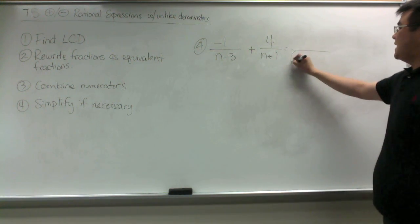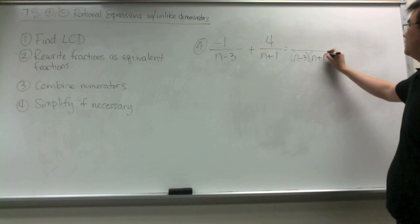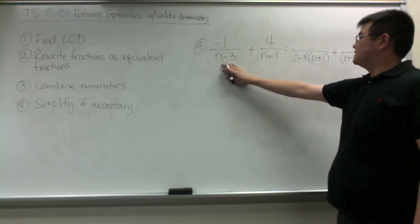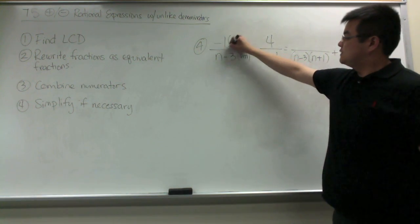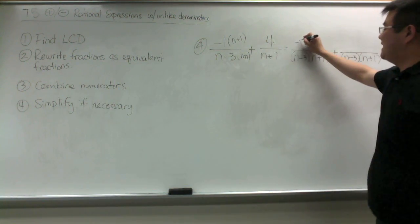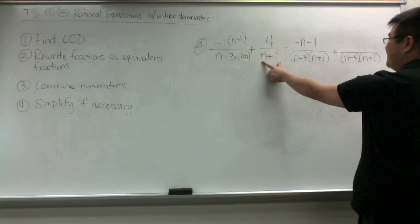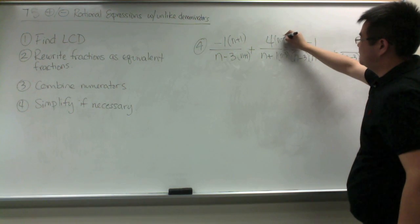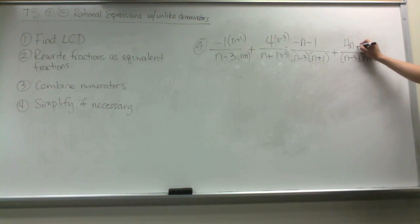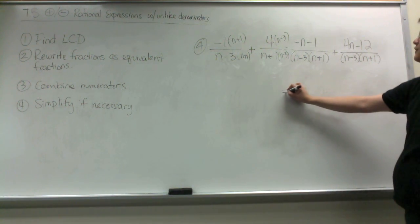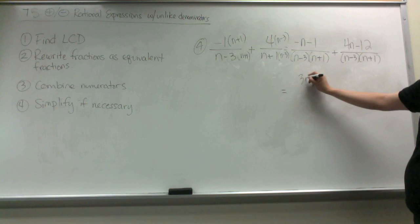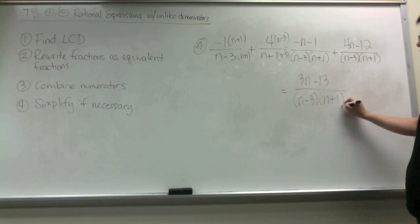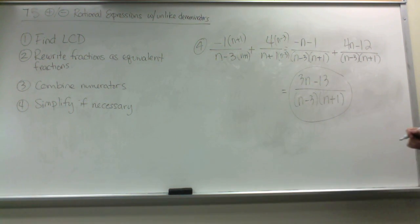In our next example, we're going to write the LCD: it's (n minus 3) times (n plus 1). We multiply this denominator by (n plus 1) to get the LCD, so the numerator gets multiplied by (n plus 1), and we get negative n minus 1 from that. Then we multiply (n plus 1) by (n minus 3) to get the LCD, so the numerator is also multiplied by (n minus 3). Distributing the 4 gives 4n minus 12. Combining the two fractions, we get 3n minus 13 over (n minus 3)(n plus 1), which is the final answer since we can't simplify or factor further.